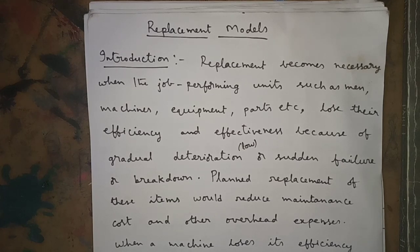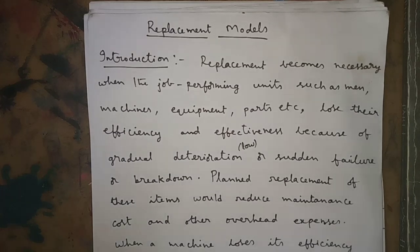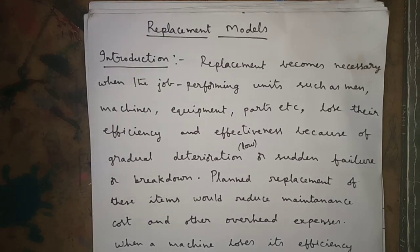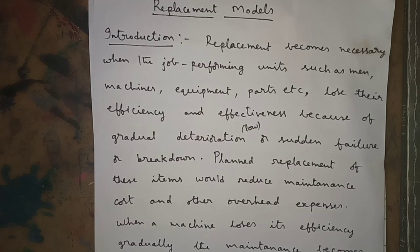Hello everyone, today I am going to explain Unit 4. The first chapter in Unit 4 is Replacement Models. Today I am going to start with replacement models — replacement of items. I wrote the introduction in easy language; if you go through it once you can understand. We will see what is meant by replacement and why the need of replacement — everything in the introduction.